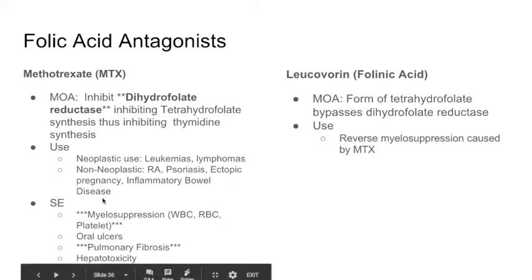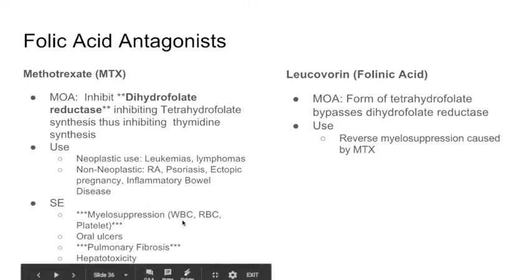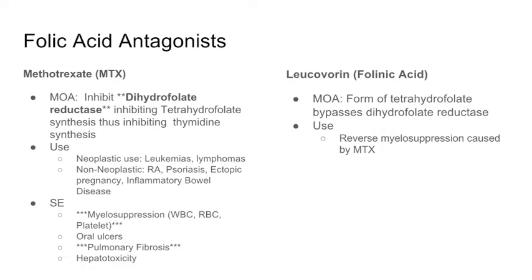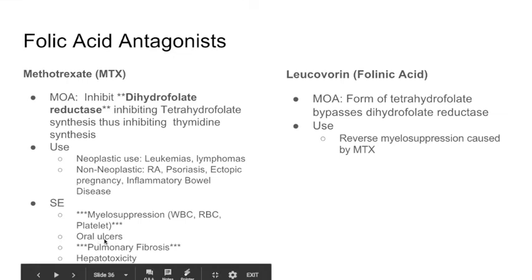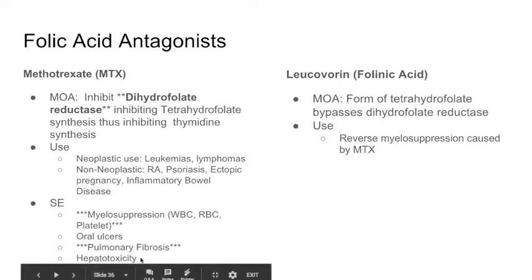The first side effect is myelosuppression — stopping the myeloid cell line from the bone marrow, causing a drop in white blood cells, red blood cells, and platelets. It also causes oral ulcers, because stopping DNA synthesis stops fast-growing cells like oral and GI cells from dividing. Pulmonary fibrosis is another well-known side effect, manifesting as restrictive lung disease. And lastly, it causes hepatotoxicity because it's metabolized in the liver.